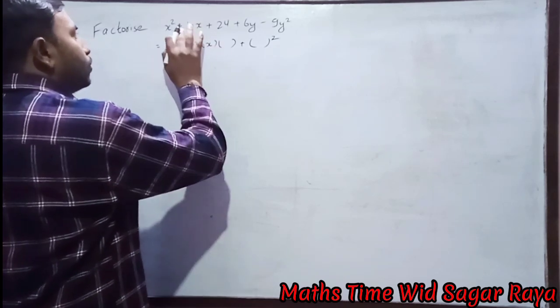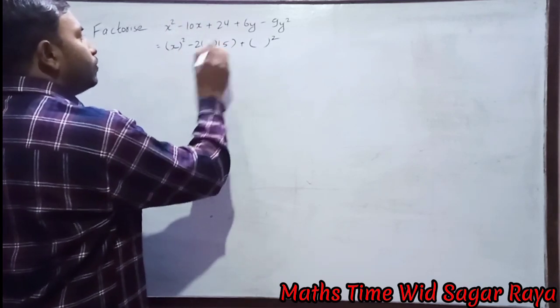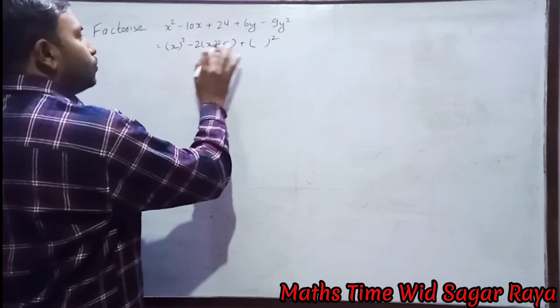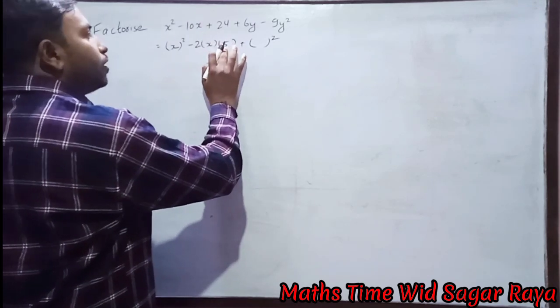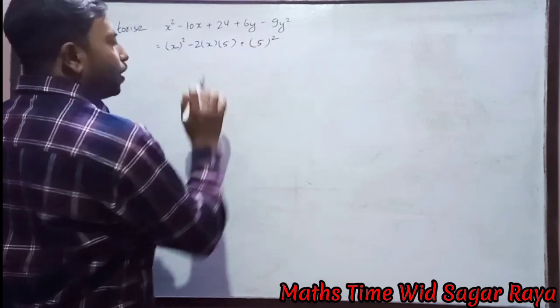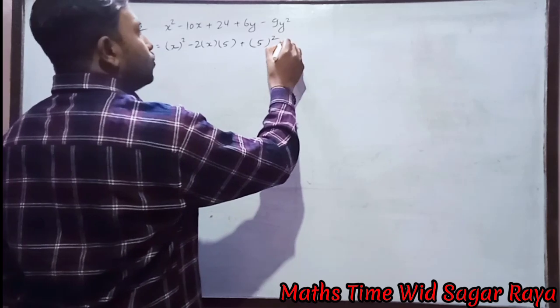Now we need -10x, so 2 × x × 5 will be 10x. 2 × 5 = 10, times x will be 10x. Instead of b we have written 5, so we will keep here 5².